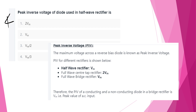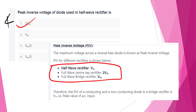The 4th question: peak inverse voltage (PIV) of a diode used in a half-wave rectifier. The PIV is the maximum voltage across a reverse-biased diode. For a half-wave rectifier, PIV = Vm. For full-wave center-tap, PIV = 2Vm. For full-wave bridge, PIV = Vm.